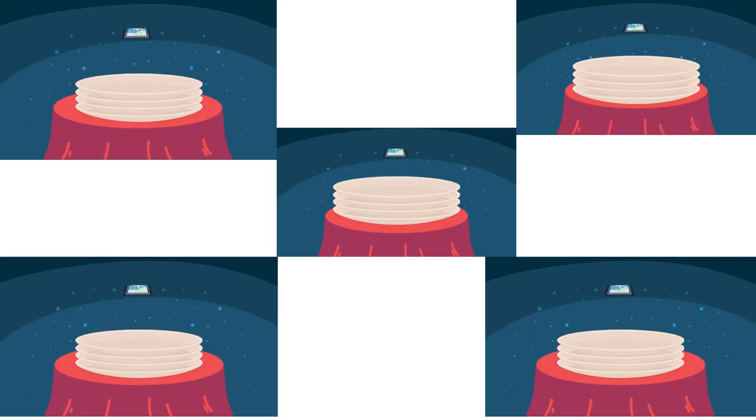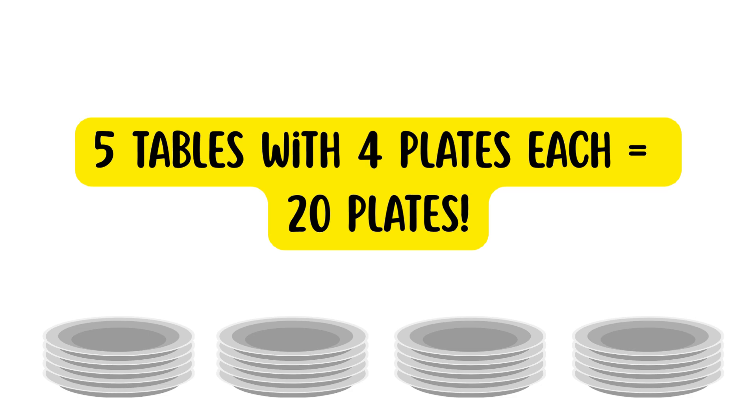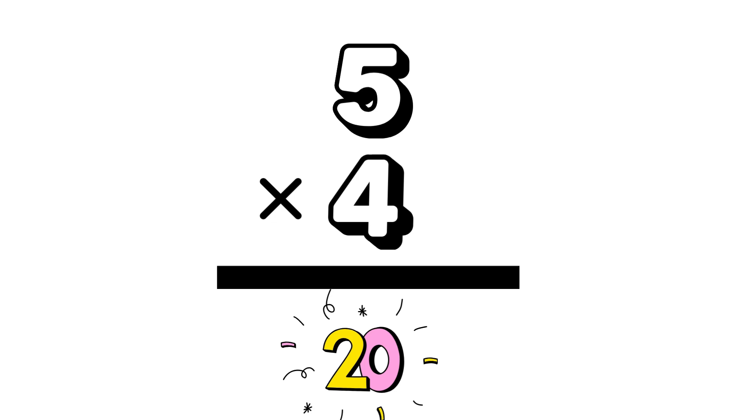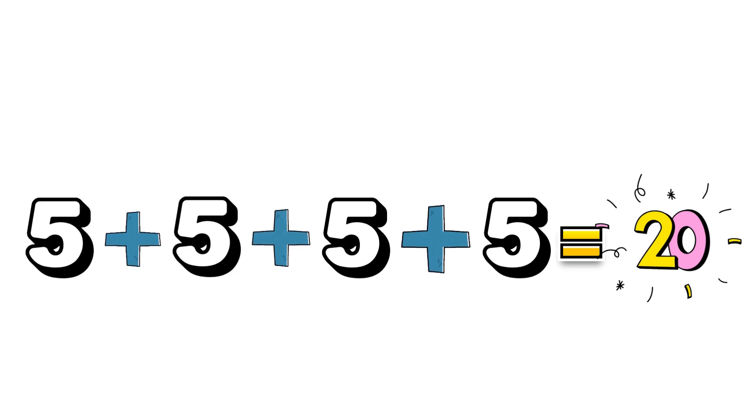Or if you're setting the table, let's say five tables with four plates each, which equals twenty plates. Five times four equals twenty. Five plus five plus five plus five gives us twenty.